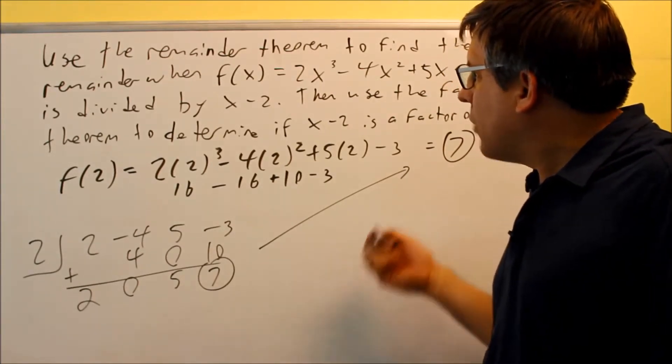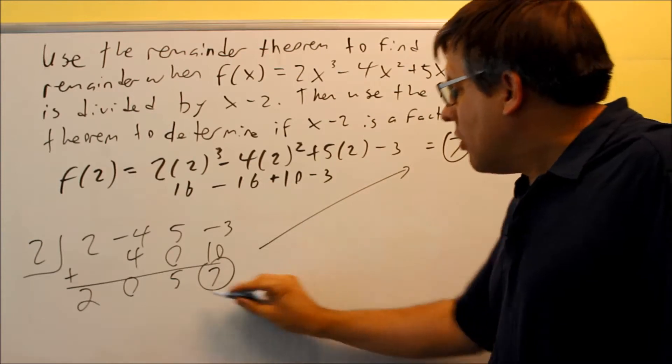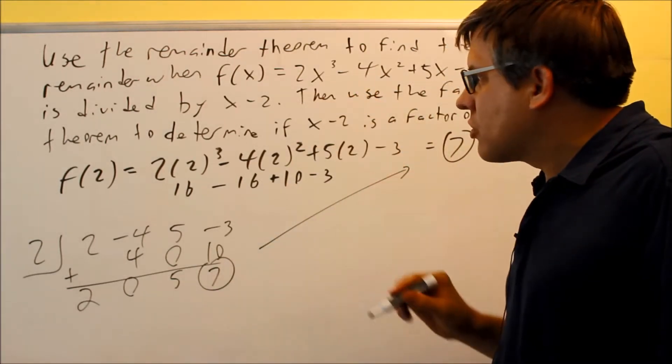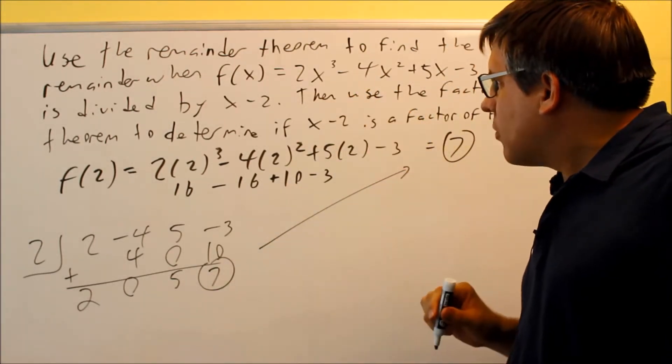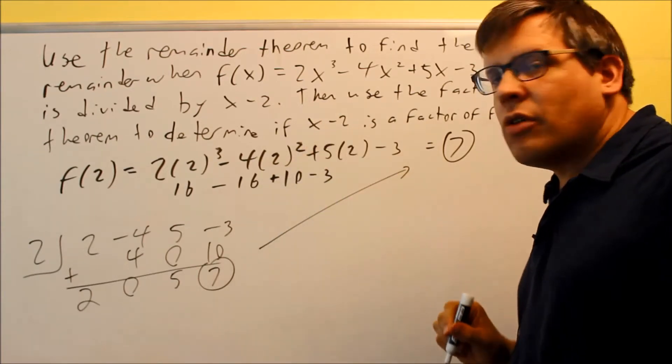So we want to find the remainder when it's divided. Okay, that would be it. The answer is going to be 7. That answers the first question. Then it says use the factor theorem to determine if x minus 2 is a factor.